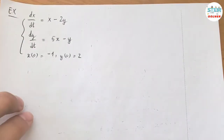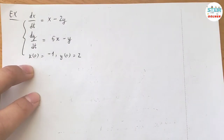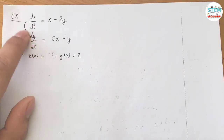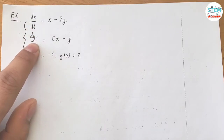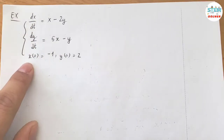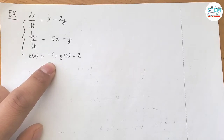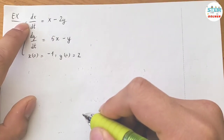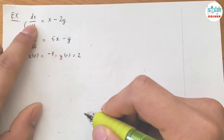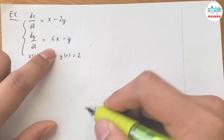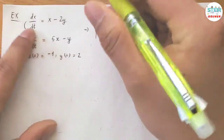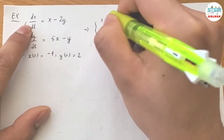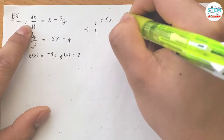We are using the Laplace transform to solve this system of linear equations. We are going to solve both equations at the same time with the given initial conditions. First, apply the derivative theorem — you have to apply it for both x and y terms because we are dealing with a system. So apply that theorem: we get s·X(s) minus x(0).